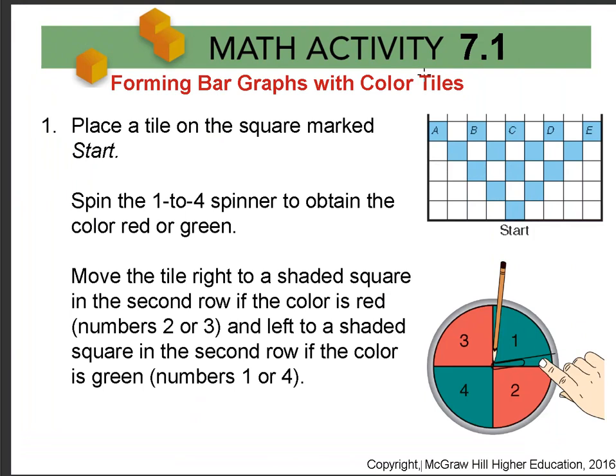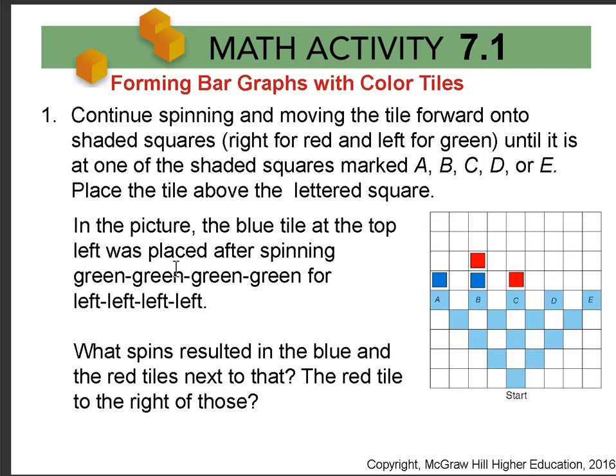The way that we proceed with our experiment is we place a tile on the start square. Then we spin our spinner and notice this is red and green. The 1 and 4 are green and the 2 and 3 are red, and we move the tile right if we land on red and left if we land on green. We continue spinning and moving a tile forward until we get to the end of the shaded squares, and then we start making our bar graph by stacking our tiles up in a bar graph shape above the letters.